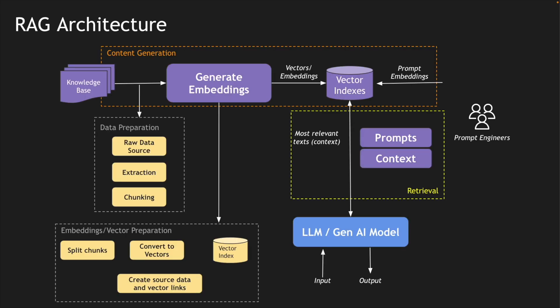Overlaying this with the AI architecture, or the RAG architecture — I made a video on RAG architecture with a diagram showing how we source data from a knowledge base such as REST endpoints or documents, extract the data, chunk it, and then create embeddings. These embeddings are nothing but vector indexes. We split the data into chunks, convert them into vectors, create source linkages, and store them as vector indexes in a database. We can also inject prompt embeddings so that these vectors can be meaningfully searched and linked.